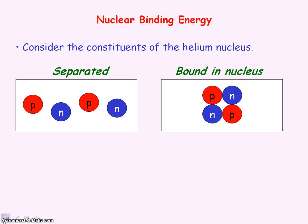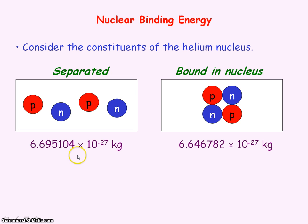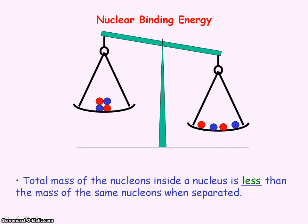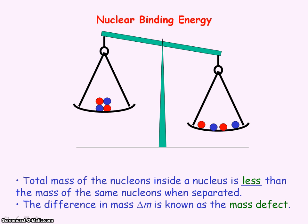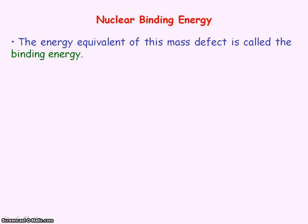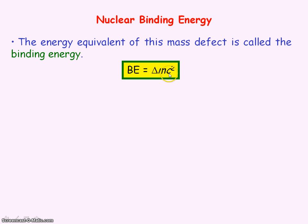If we look at the constituents of the helium nucleus, which is two protons and two neutrons, the mass of the protons and neutrons inside the helium nucleus has a specific value. The mass of the separated individual nucleons is greater than the mass of the nucleons when combined inside the nucleus. This difference in mass is known as the mass defect. The energy equivalent of this mass defect is called nuclear binding energy, given by Einstein's mass energy equation: binding energy equals mass defect multiplied by the speed of light squared.